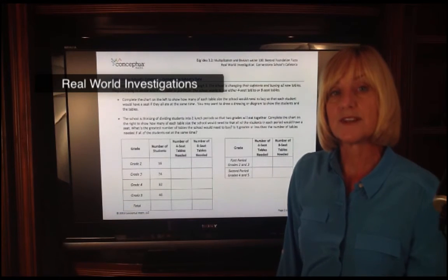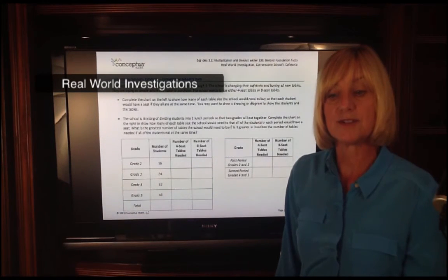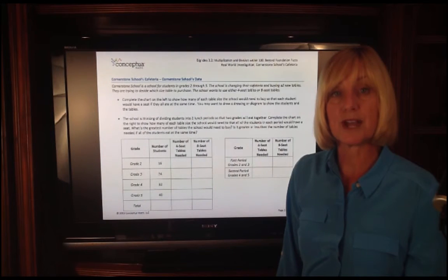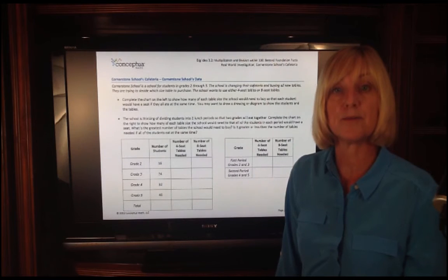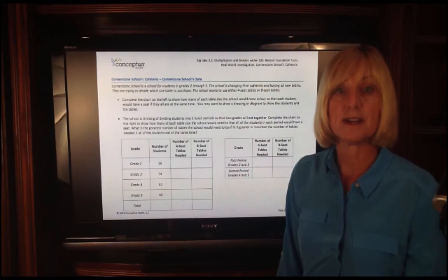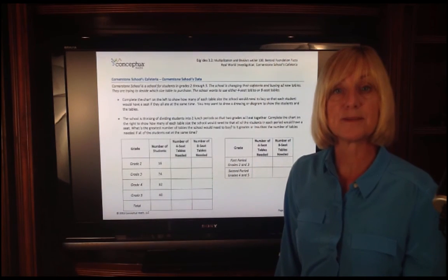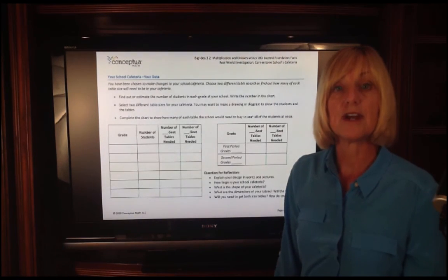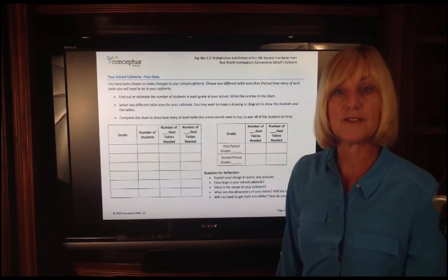The real world investigation with this unit has to do with Cornerstone School cafeteria. They are redoing the cafeteria and students have to determine which size table best fits the amount of students. Tables that seat groups of four or groups of eight. As they move through the second tier, they are allowed more flexibility. And in the last tier, they are designing their own school cafeteria and selecting the table sizes for the population that are in their schools.